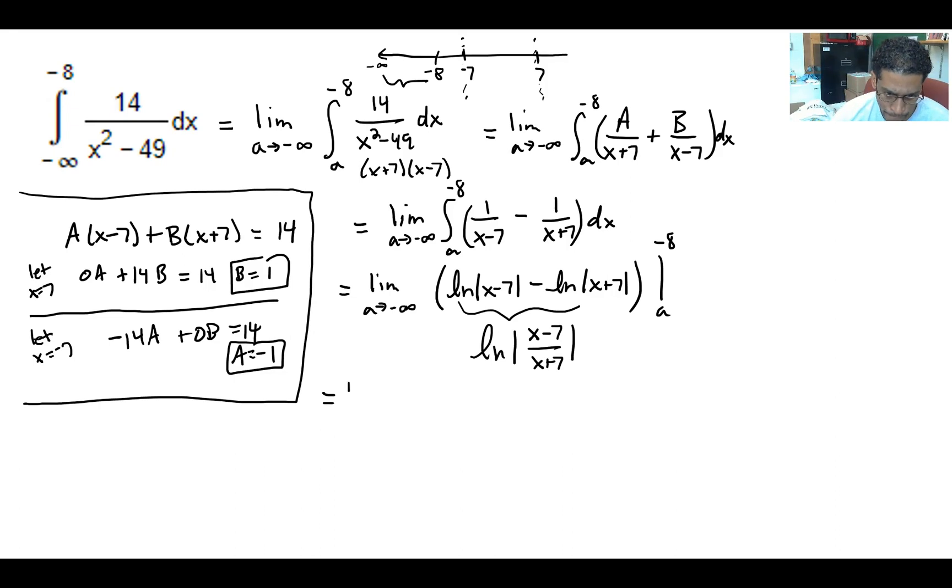Taking the limit as a goes to minus infinity, first what gets plugged in is the negative 8, and so you'll have the natural log of negative 8 minus 7 on top of negative 8 plus 7. Then you'll have the natural log of a minus 7 on top of a plus 7.